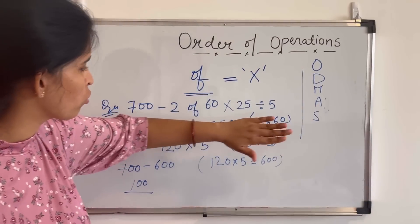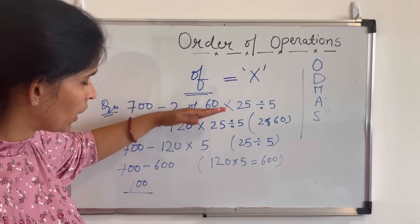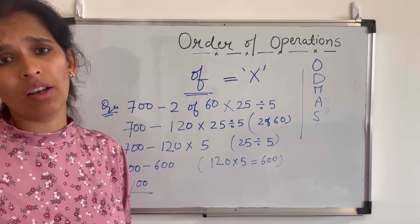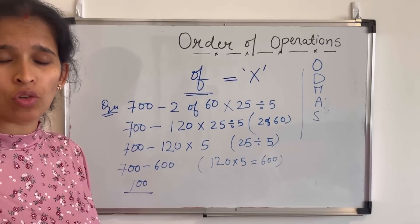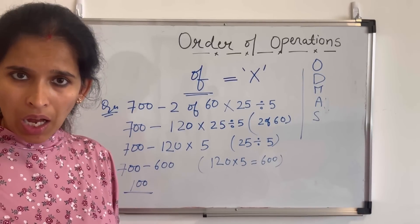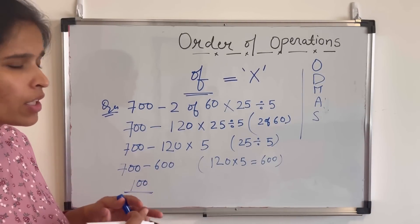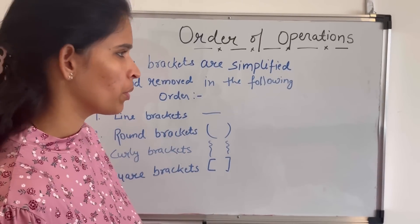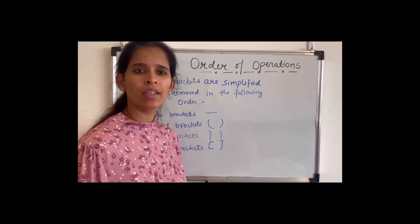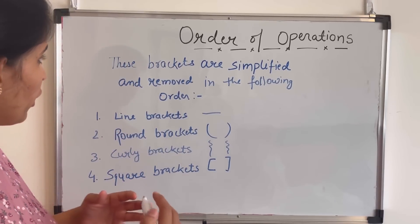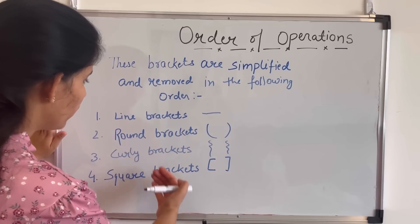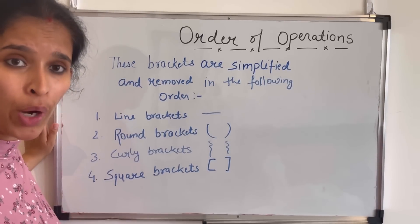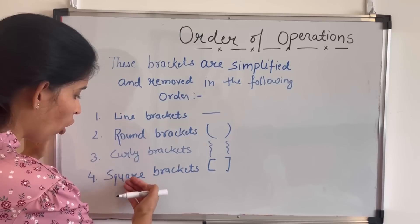I hope you understand how to solve using the DMAS rule. Now we will learn how to solve our problems when there is a bracket. We will learn about the types of brackets and how we are going to solve our problems if there are one, two, or three brackets included. In mathematical problems, we get some problems where we can see brackets written in different ways. If there are two brackets, then we are going to solve them as per a specific order.